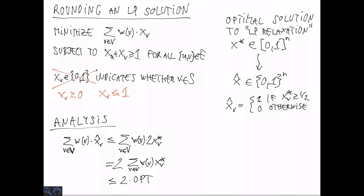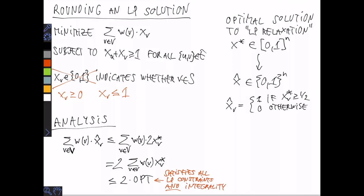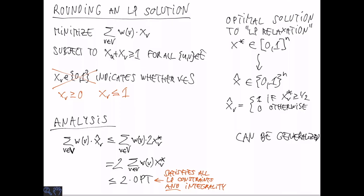Why is 2 times the LP objective value at most 2·OPT? Because the optimal integer solution satisfies all the LP constraints and additionally satisfies integrality, so the LP optimal cannot be larger than OPT. Thus the rounded solution has cost at most 2·OPT, giving us a 2-approximation for vertex cover.